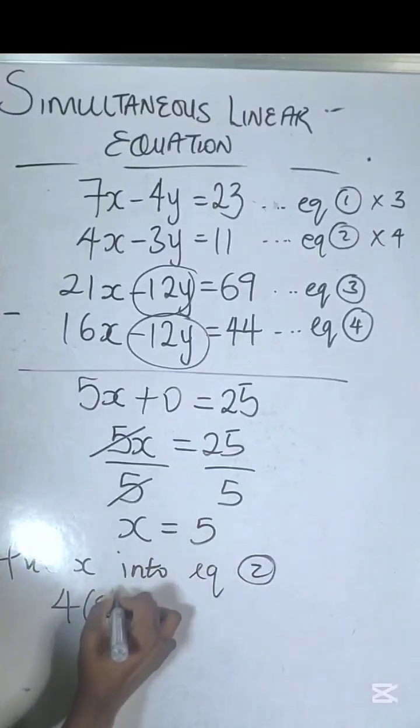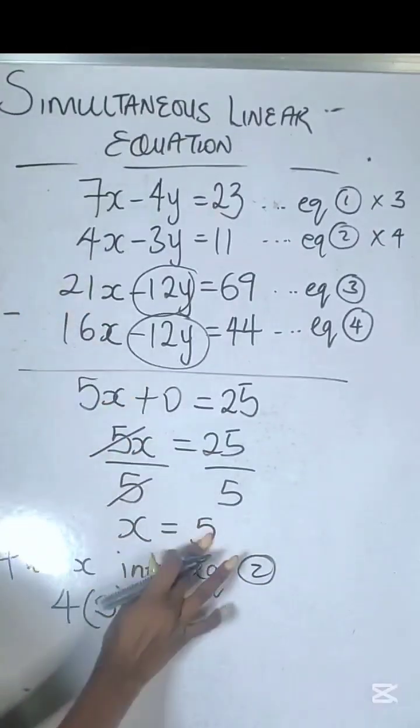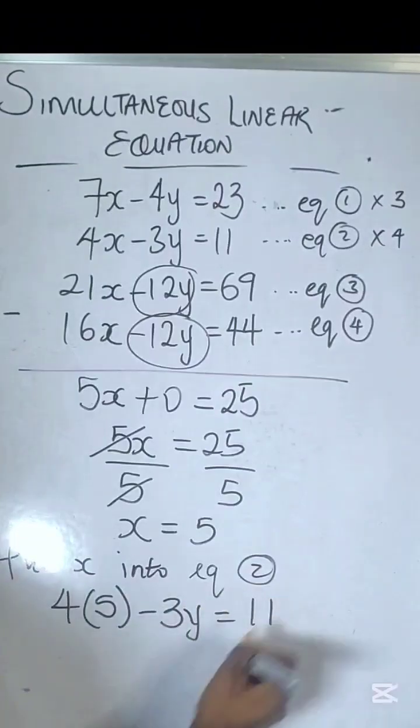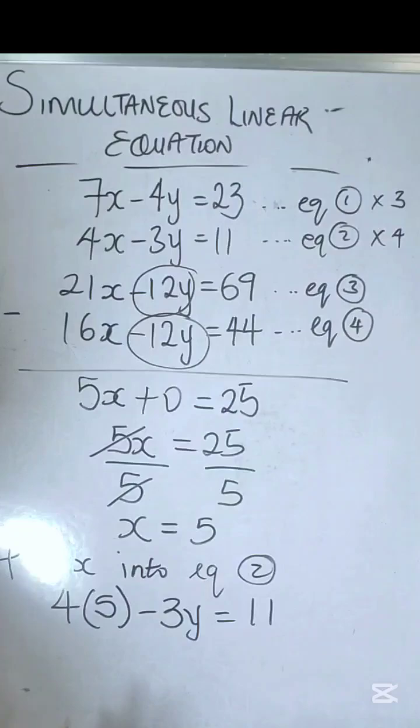So you have 4 times x. x is 5, so you're substituting 5, and then you have -3y equals 11. For those who don't know how to substitute values into algebraic equations or expressions, check the previous video.